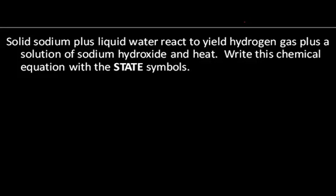Let's take a look at a couple of examples of balancing chemical equations. In this case, the observation was made that solid sodium plus liquid water react to yield hydrogen gas plus a solution of sodium hydroxide and heat. Write this chemical equation with the state symbols.